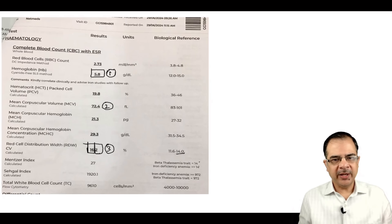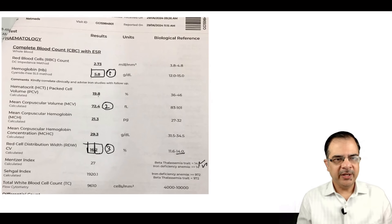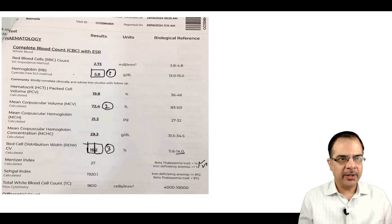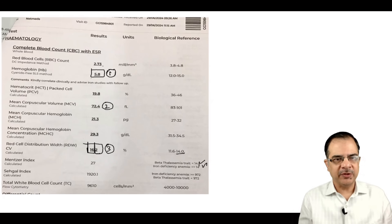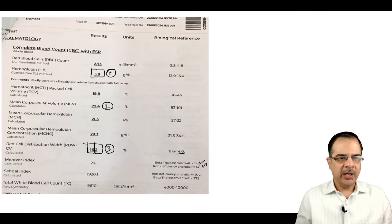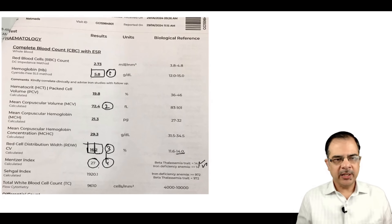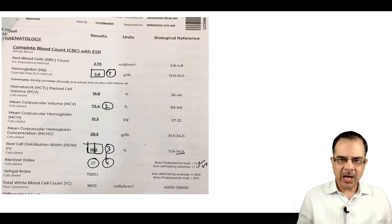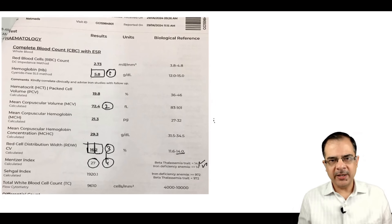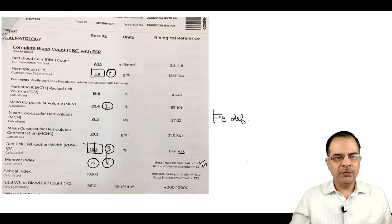We also calculate the Mentzer Index. Here, MCV is 72.4 divided by RBC count of 2.73, which comes out to approximately 27 — clearly more than 14. This is the fourth step confirmation. The diagnosis is iron deficiency anemia.